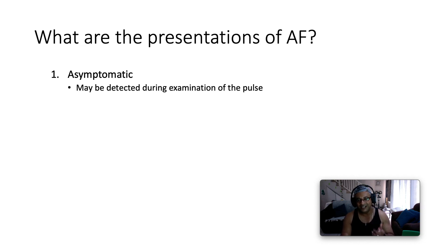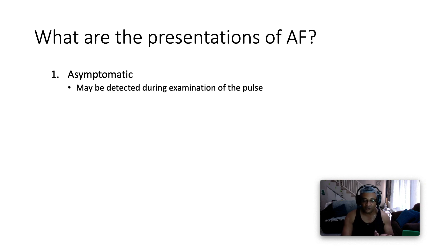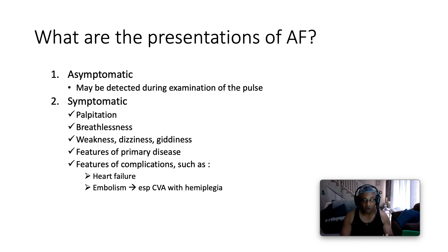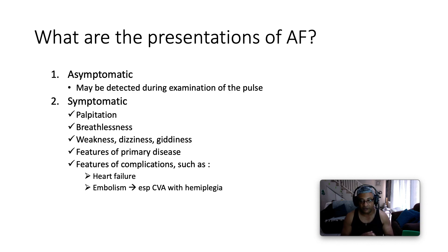What are the different clinical presentations of atrial fibrillation? The patient can be asymptomatic, and you may have picked up AF by routine examination of the pulse and done an ECG to confirm. Or the patient may come in with symptoms. Typical symptoms include palpitations — feeling the heart beating very fast or very slow — which may be coupled with syncope. They complain of breathlessness and dyspnea, graded according to the New York Heart Association scale. They may also complain of weakness, dizziness, and giddiness.